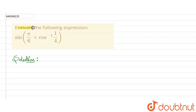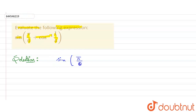Hello everyone. In this question, we are instructed to evaluate the following expression. The expression given is: sine of bracket pi by six plus cos inverse of one upon four.